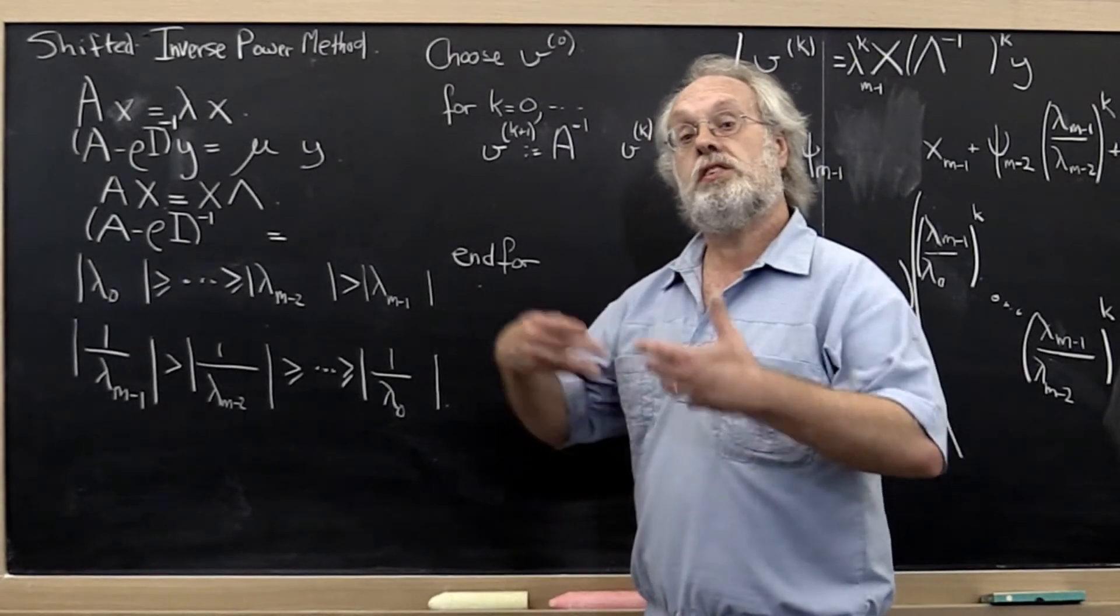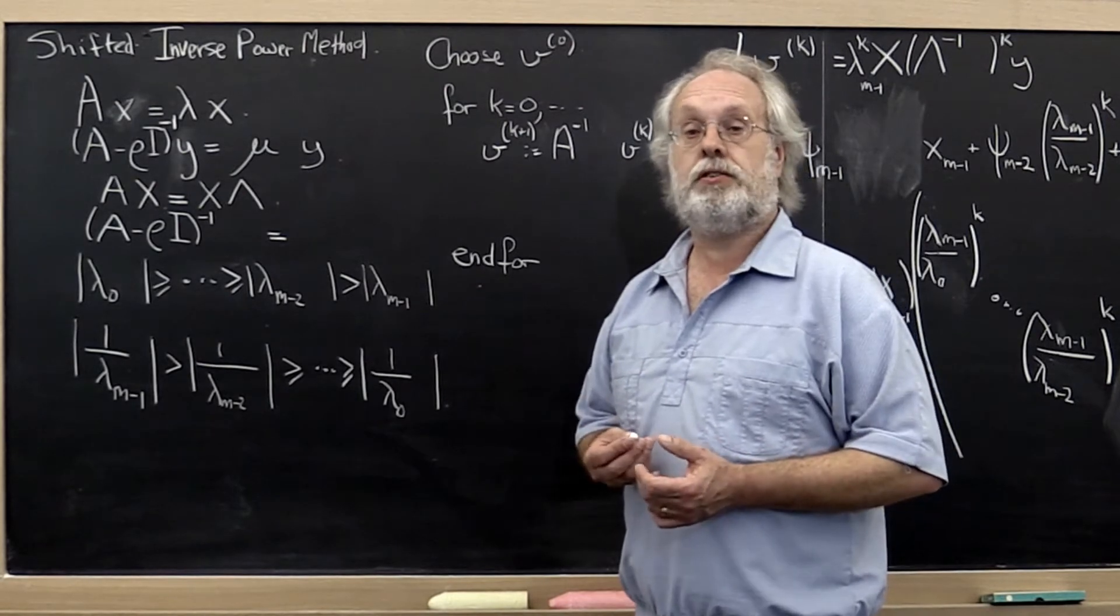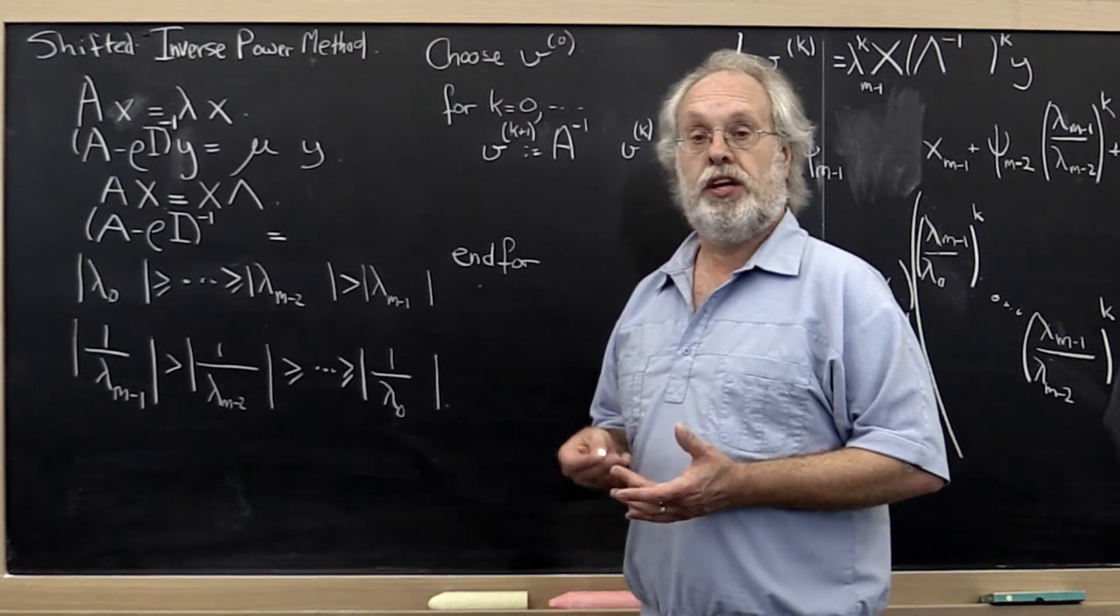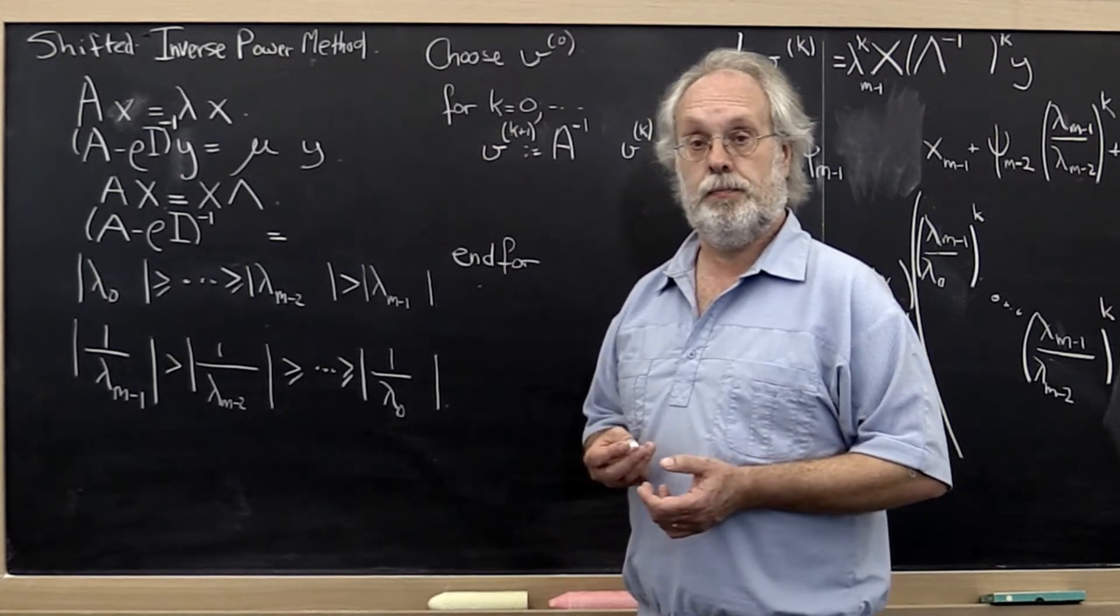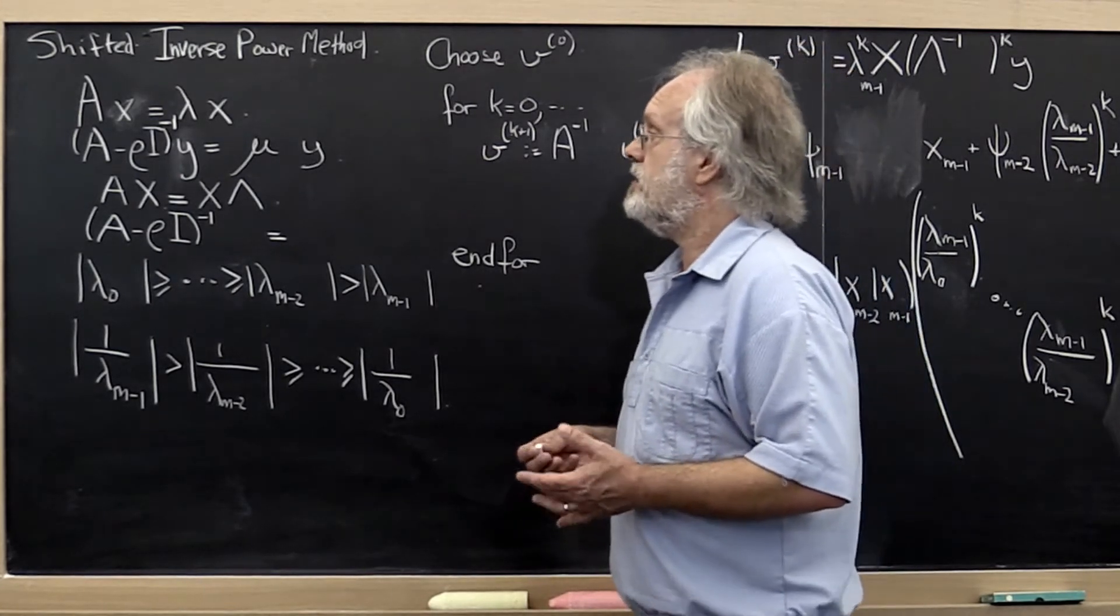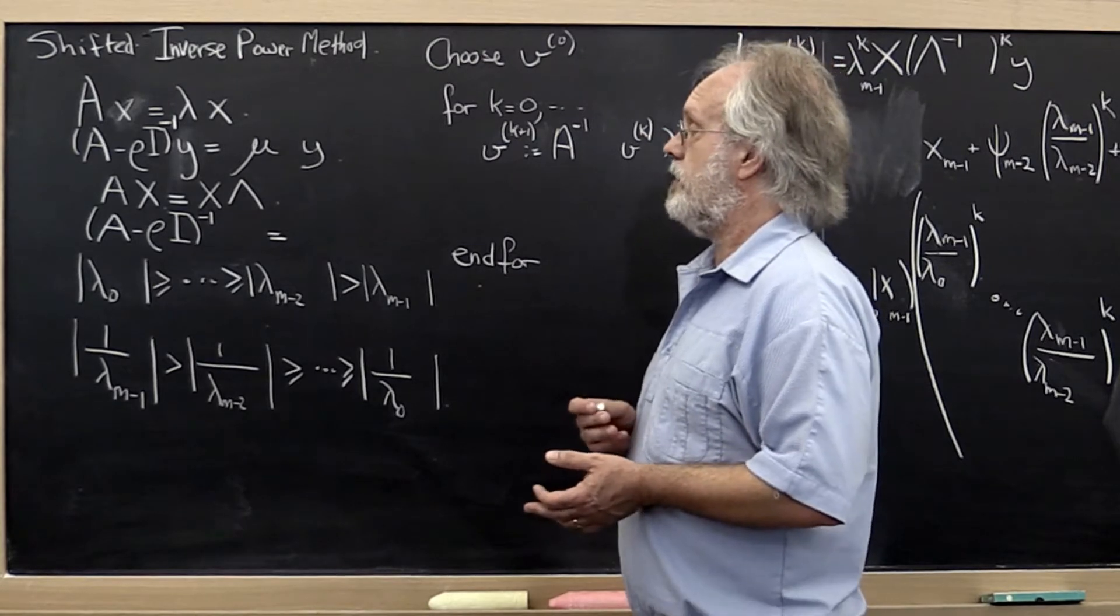So now we're going to take one step further towards a practical algorithm for computing the eigenvector associated with the smallest eigenvalue. And how does that work? This is called the shifted inverse power method.